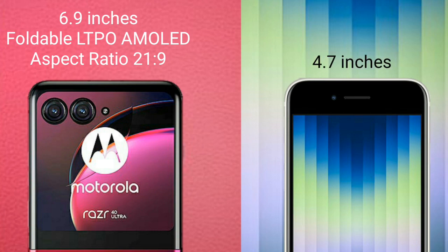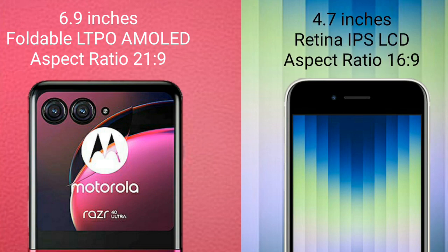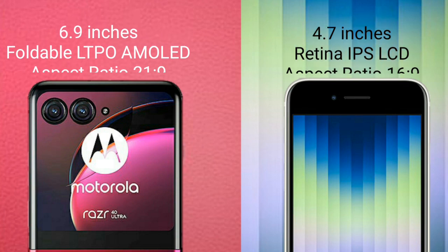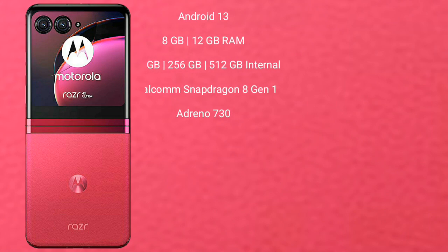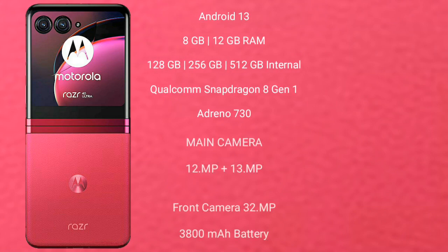The iPhone SE comes with a 4.7-inch Retina IPS LCD display and an A16 processor. The Motorola RAZR 40 Ultra runs on the Android 13 operating system.